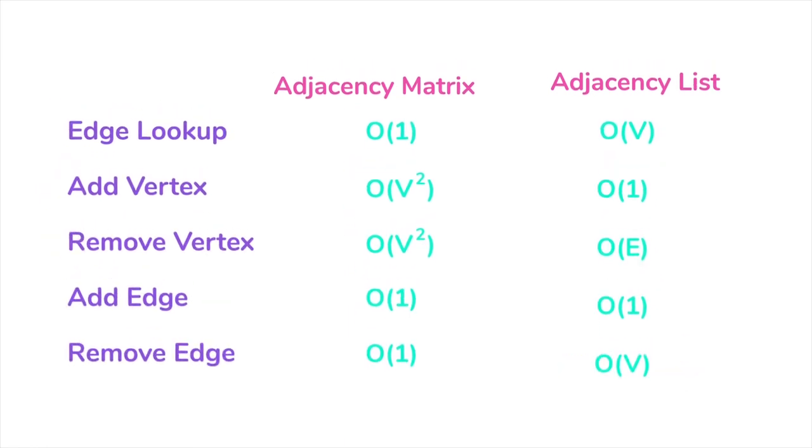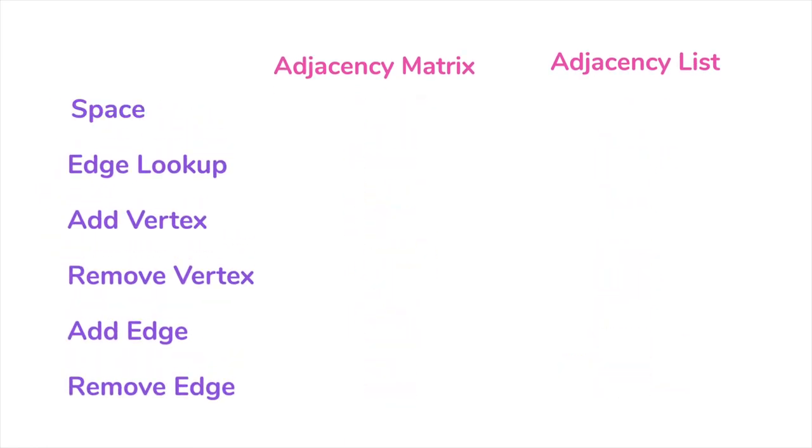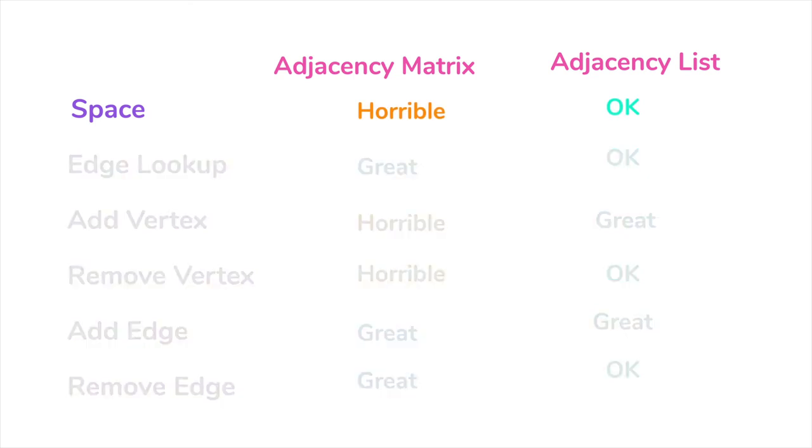So overall, if your graph doesn't have too many edges, the adjacency list would be better than the adjacency matrix when it comes to space. For the operations, if you need to do a lot of lookups and not much modifications, the adjacency matrix would be better.